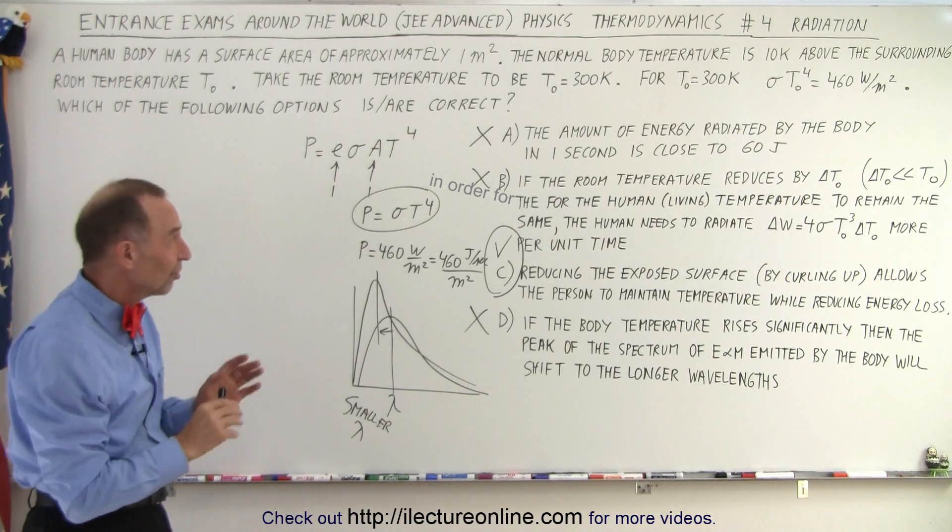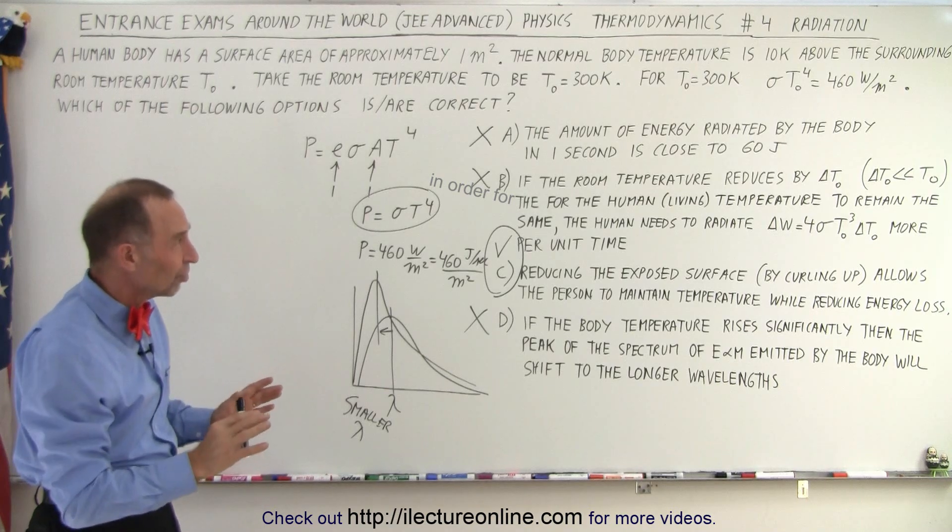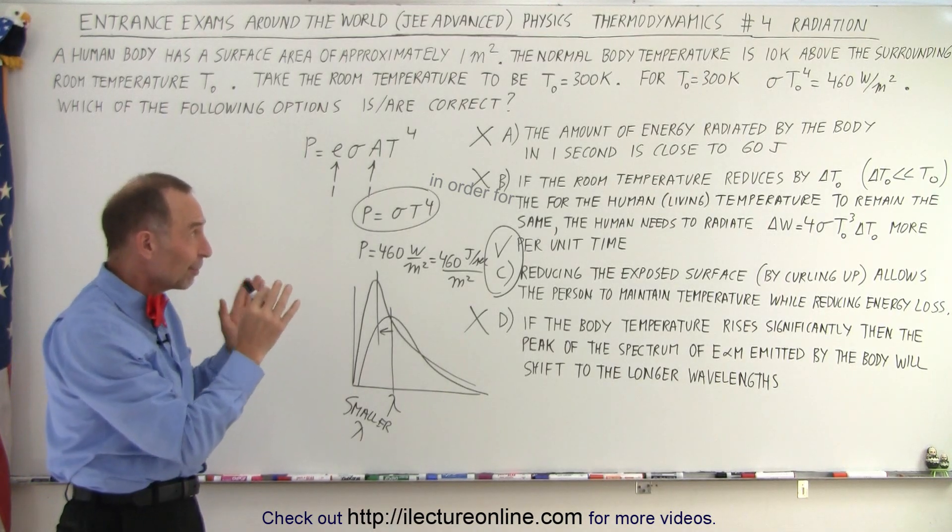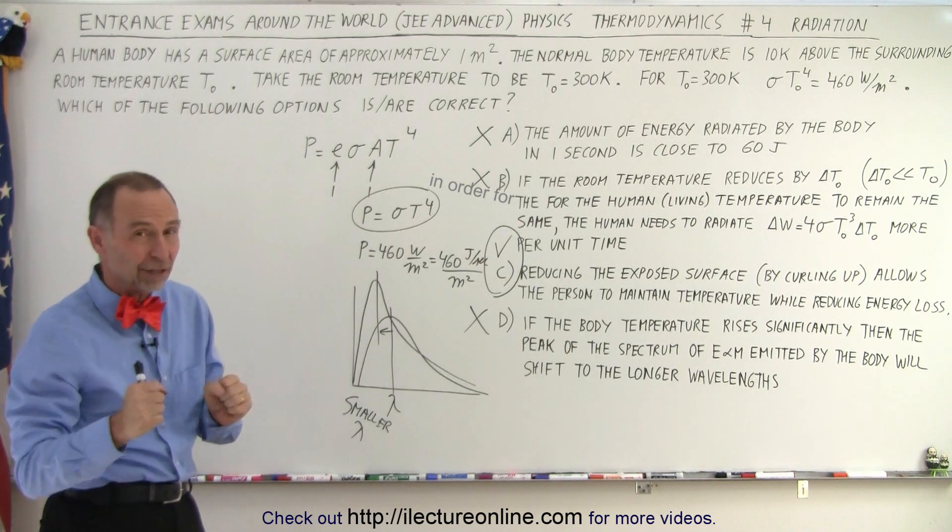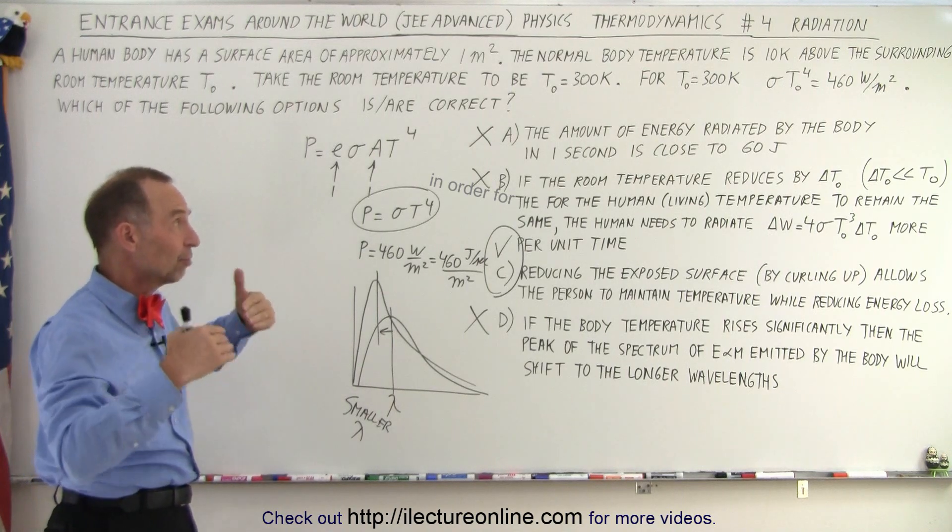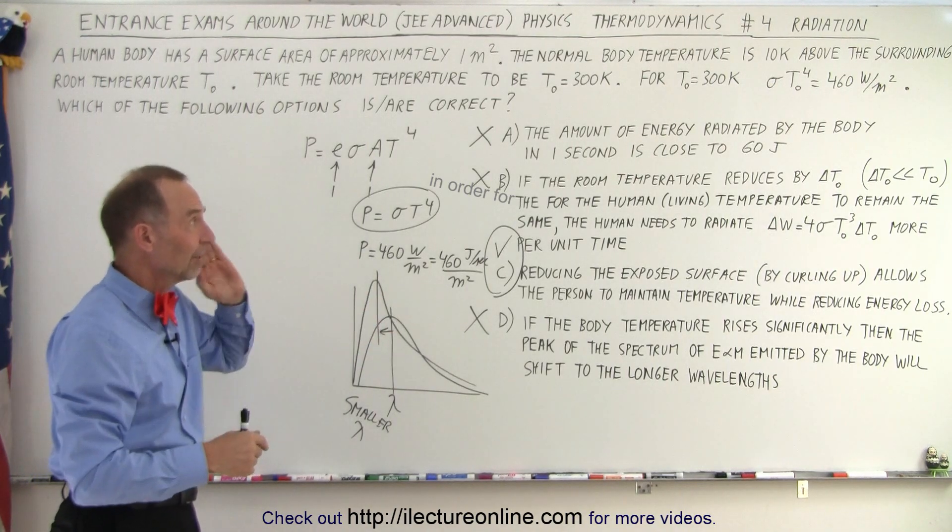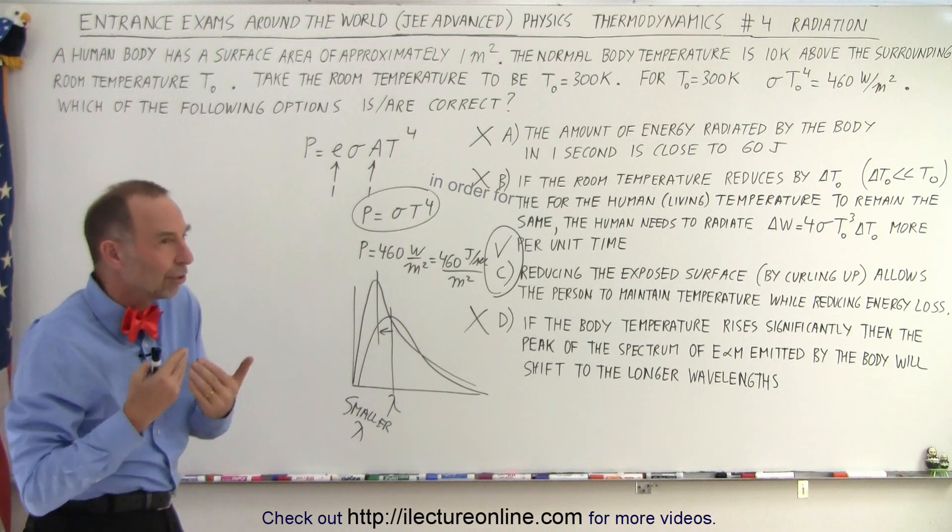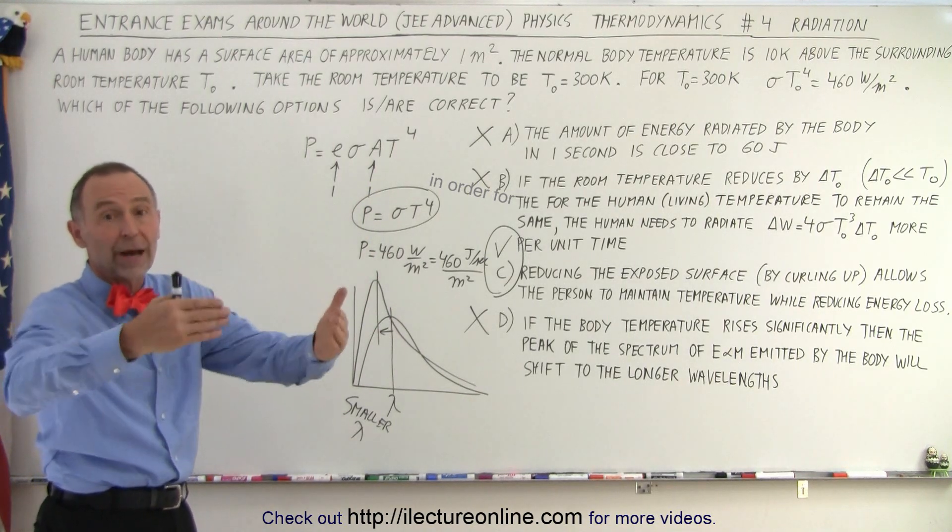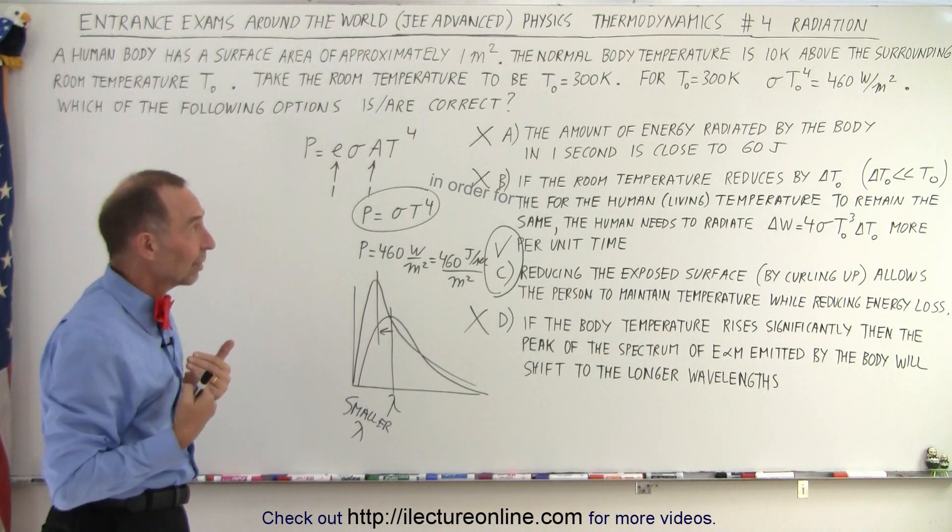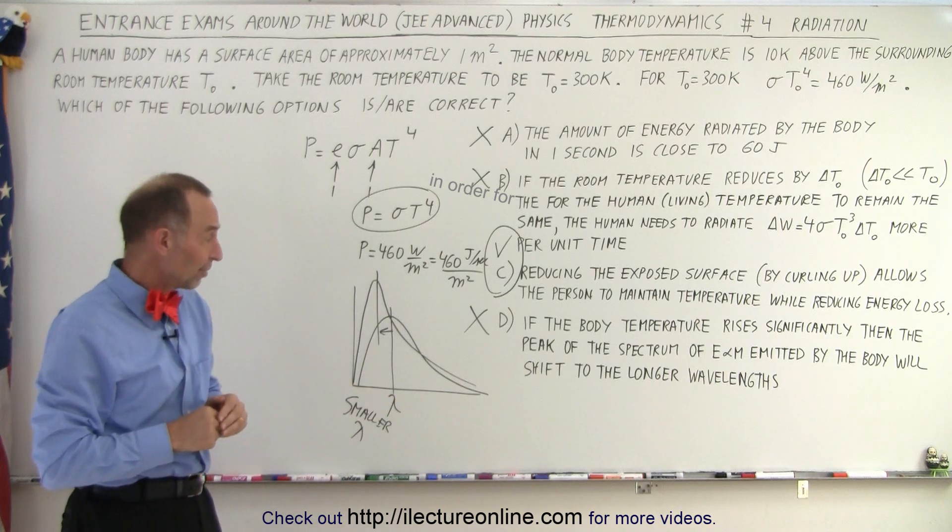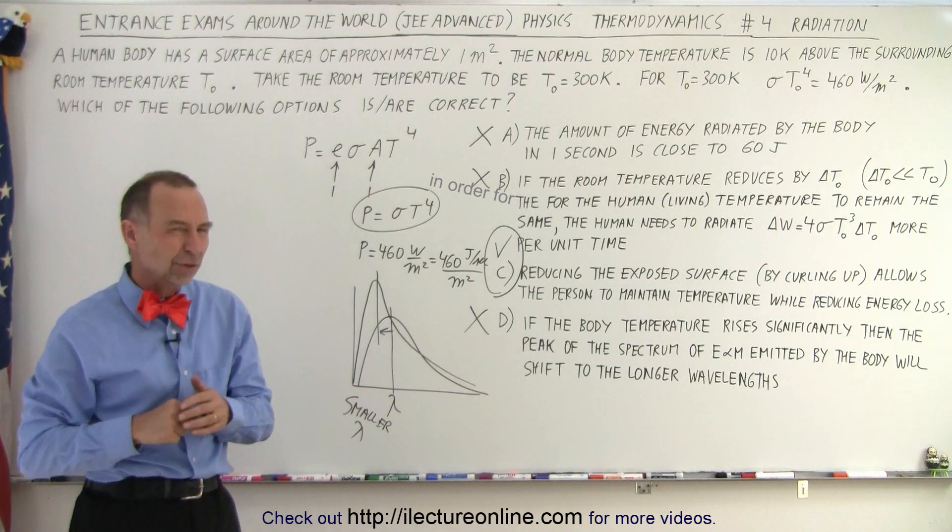Again, sometimes in these questions, the way they ask the question, it could be easily misinterpreted. So, you got to be very careful about sticking exactly to the statement and taking it at its face value. So, in that case, the body radiates more than 460 joules per second. So, A is incorrect. If they had set the net radiation away from the body, or from the body minus the radiation that comes back from the room, then the 60 joules would be about correct. So, sometimes you got to be very careful about interpreting the questions correctly.